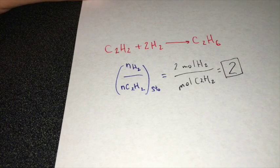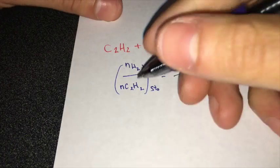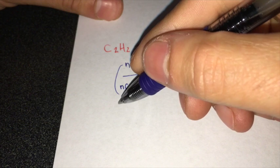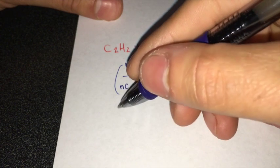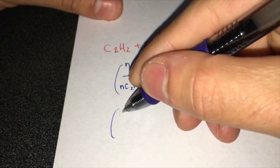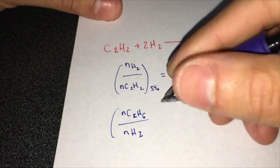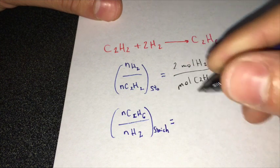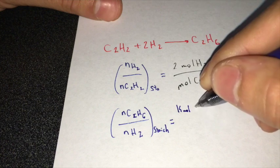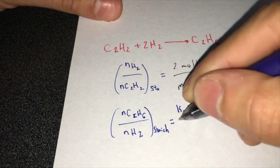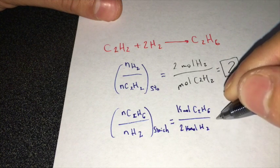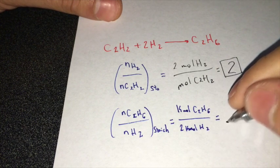For every two moles of hydrogen reacted, one mole of ethane is formed. So the mole ratio of C2H6 formed to H2 consumed would be K moles of C2H6 over two K moles of H2, which equals 0.5.